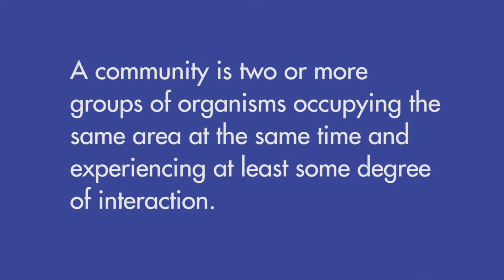Since it would be impossible to study all the organisms in each ecosystem, we will limit our ecological survey to a small community of invertebrate organisms living within each ecosystem. The word community often refers to groups of people living in an area, but it has a slightly different meaning to an ecologist. In ecological terms, a community is two or more groups of organisms occupying the same area at the same time and experiencing at least some degree of interaction.